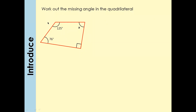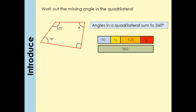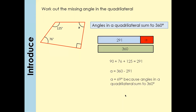The angles in a quadrilateral add up to 360°. The right angle symbol means 90°. So we add the three known angles: 90° + 76° + 125° + A = 360°. Adding those three gives 291°, and 360° − 291° = 69°. So angle A is 69°.